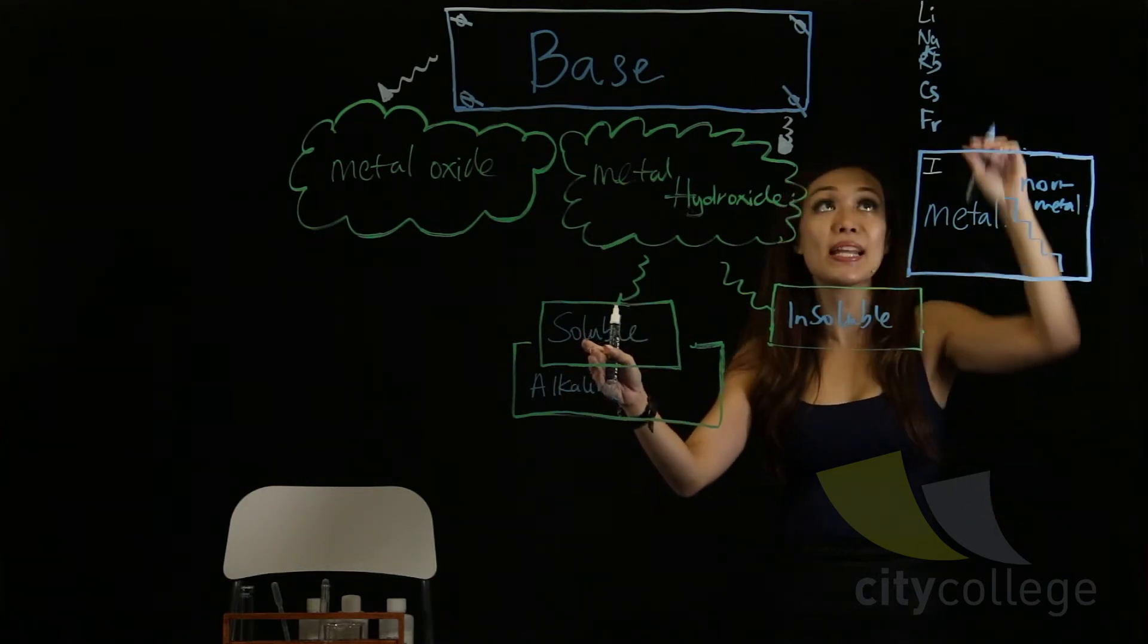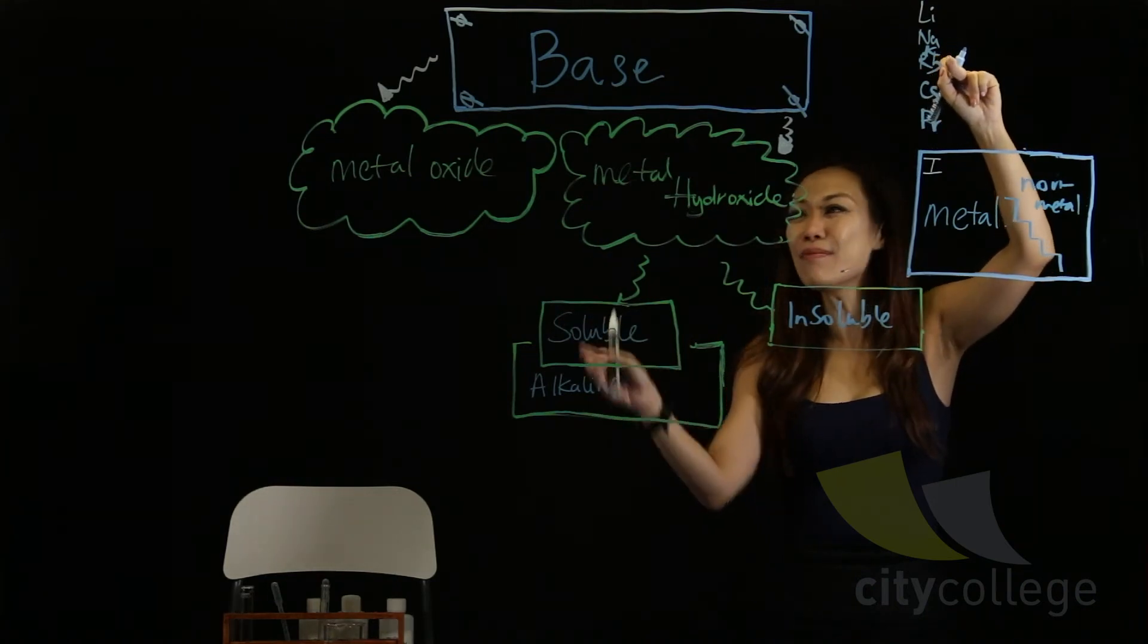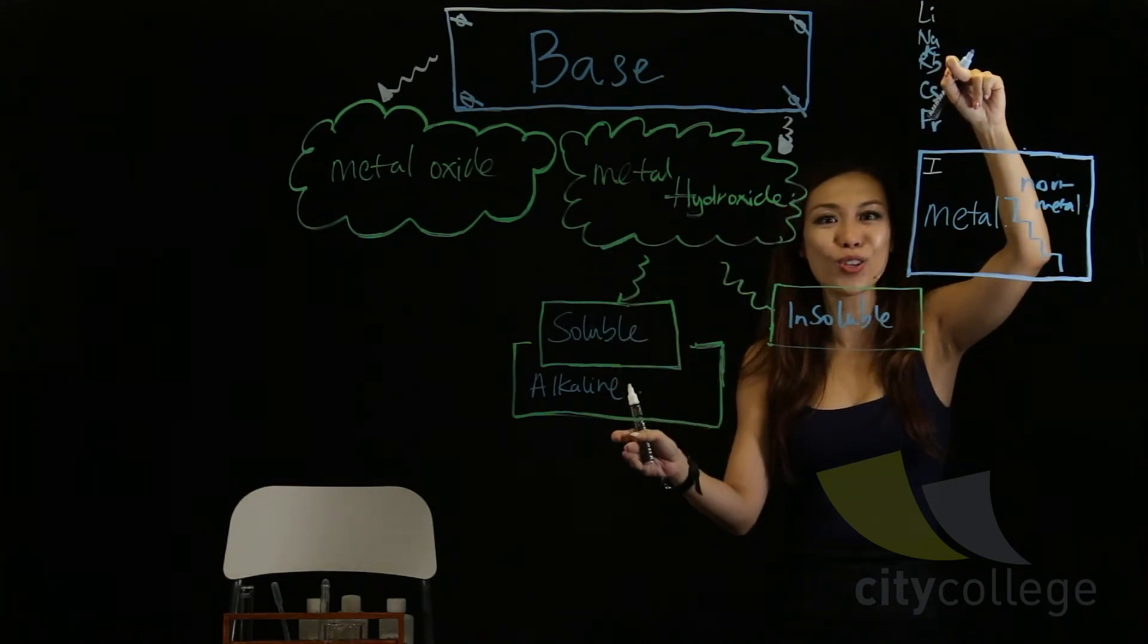Soluble metal hydroxide means that if I have sodium hydroxide, soluble, alkali. Potassium hydroxide, soluble, also alkali.